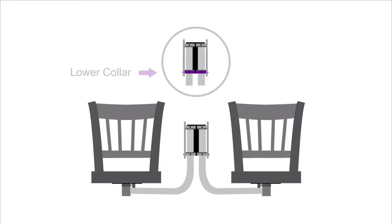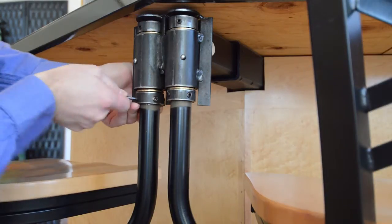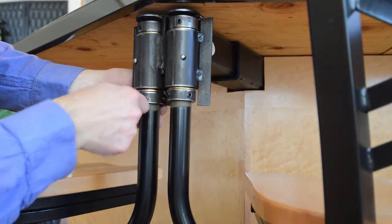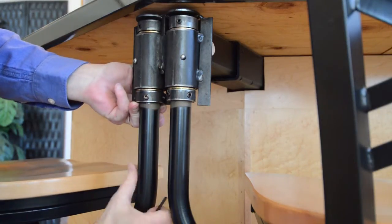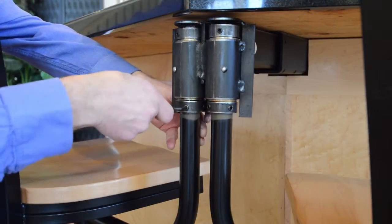Locate the lower collar and loosen the 4 set screws. Once the lower collar is loosened, wiggle the lower collar upward on the arm tubing to eliminate the gaps between the head assembly cylinder and the lower collar. Then re-tighten the set screws.